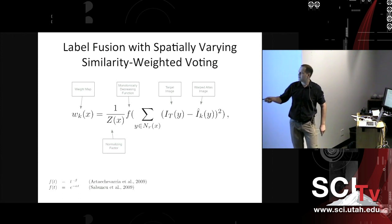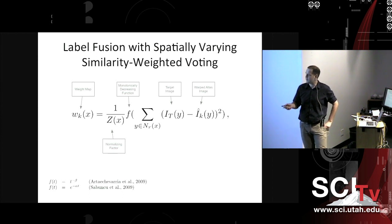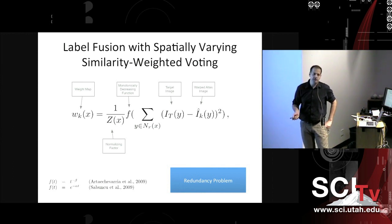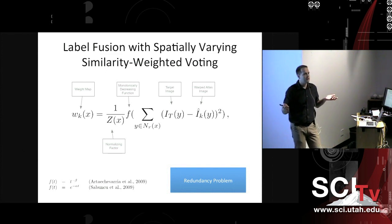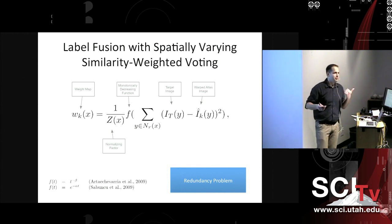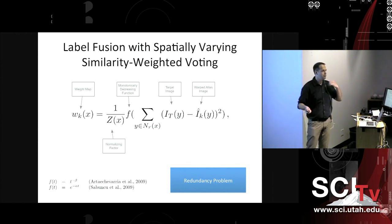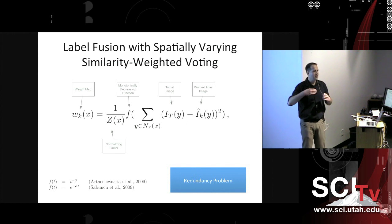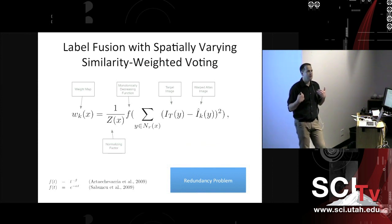One issue is how do you know what's the right function to use. The other issue we focused in on is the problem of redundancy. There's a very simple example: let's say we have ten atlases, then take one of those atlases and replicate it a hundred times. We end up with a dataset of 110 atlases where one same atlas is repeated 100 times. That atlas might be a very poor match for my brain anatomy, but because it's repeated 100 times, its weight is going to be amplified 100 times as well. That's not going to help segment my brain any better.